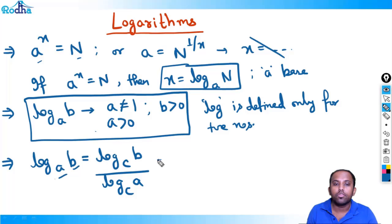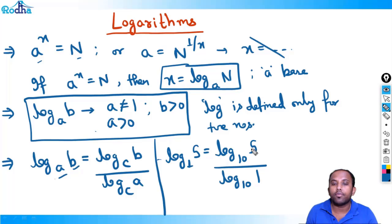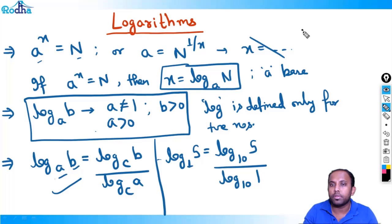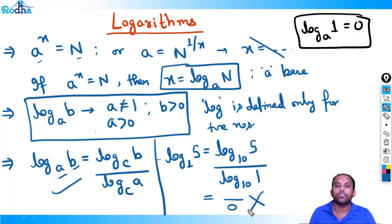The reason base a cannot equal 1: if we apply the base change formula and put a equal to 1, we get log_10(5) upon log_10(1) in the denominator. But log of any base with argument 1 is always 0 — log_a(1) equals 0 for any base. So we'd have a 0 in the denominator, which is undefined. That's why the base of a logarithm cannot be 1.